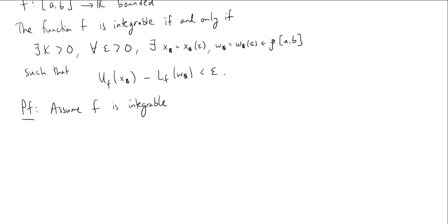We need to prove that for all epsilon there exist partitions satisfying the condition, so the first line is: let epsilon be greater than zero. Because f is integrable, the lower and upper integrals are equal. I know that the upper integral equals the infimum of all of the upper sums — running through all partitions Z in P. The key idea is that this infimum cannot be too far away from the upper sums.